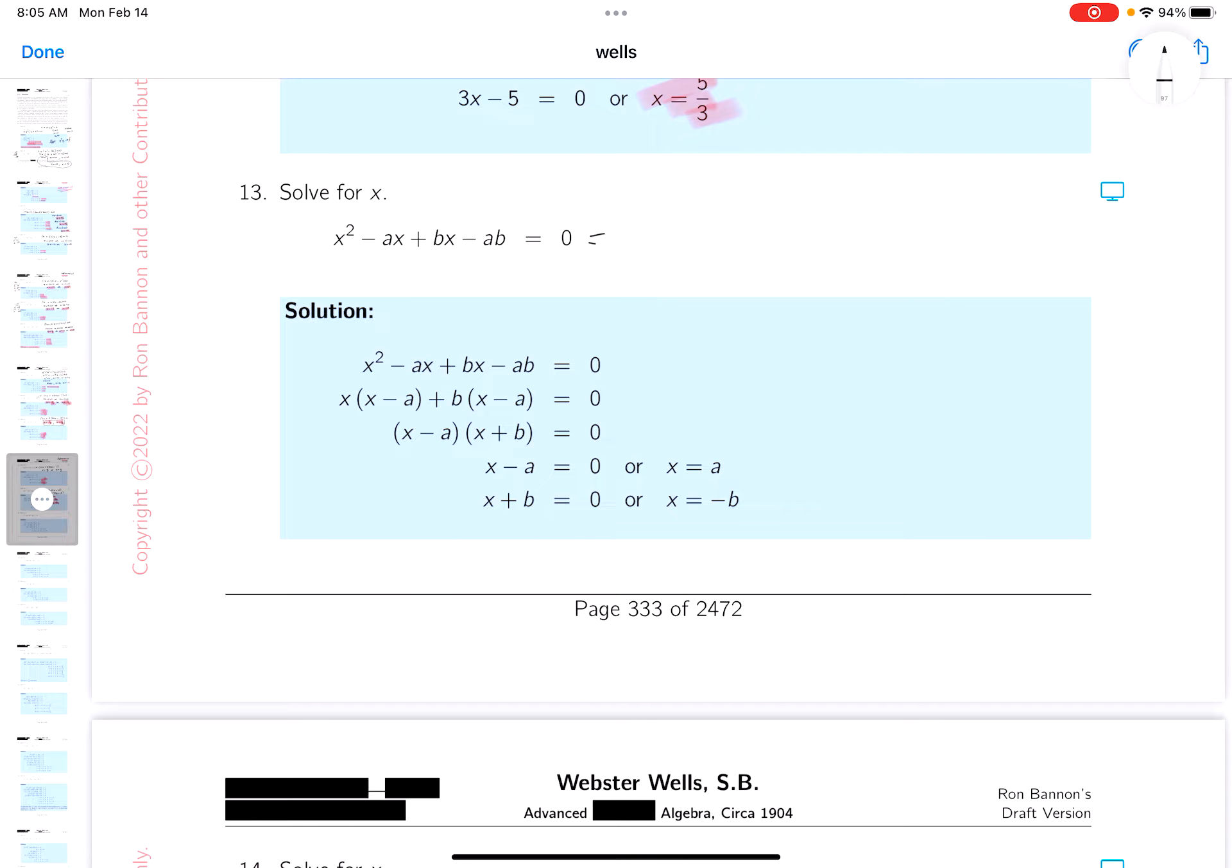Well, first step would be group the first two terms and you get x, and I would give you x minus a. And then I'd group the second two terms and I pull a b out, and what do you get? You would get x minus a.